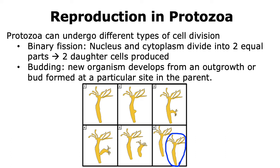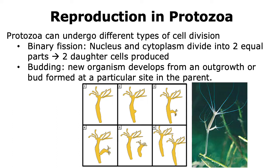In this specific example, we are looking at budding in the case of hydra, which is not a protozoan, but the concept is the same. In the case of hydra, as shown in the figure to the right, we can have multiple buds that then give rise to the daughter organisms.